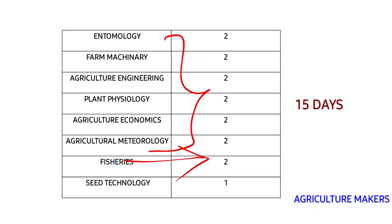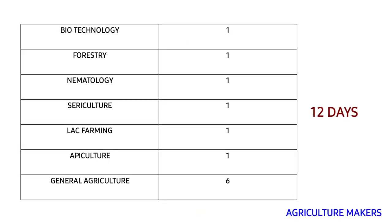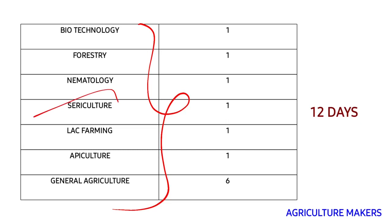I have allocated one day to seed technology, and then one day each for biotechnology, forestry, nematology, sericulture, lac farming, and apiculture. Nowadays there are questions from sericulture and apiculture too — in AFO mains 2020-21 there were three questions from sericulture. Reading the basics is enough for sericulture, apiculture, and lac farming, but you have to make notes and revise so that it will be easy to recollect.